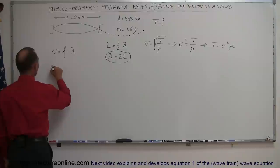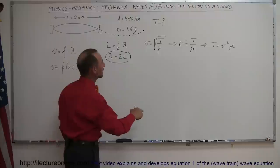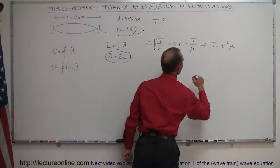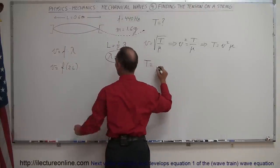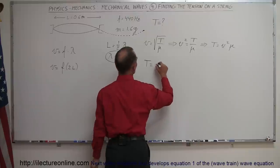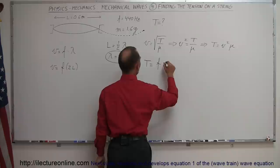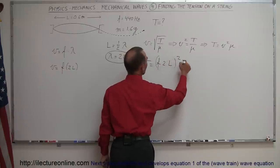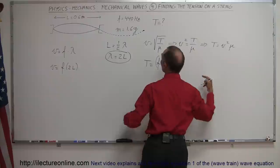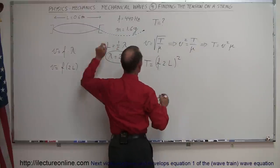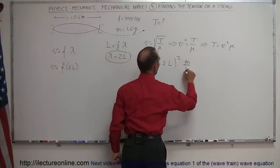That means that the velocity is equal to frequency times twice the length, and that can go in here for the velocity squared. So the tension is equal to the velocity squared, which is the frequency times 2 times l, quantity squared, times the mass per unit length. So mu is the mass per the length of the string, so that's m over l.